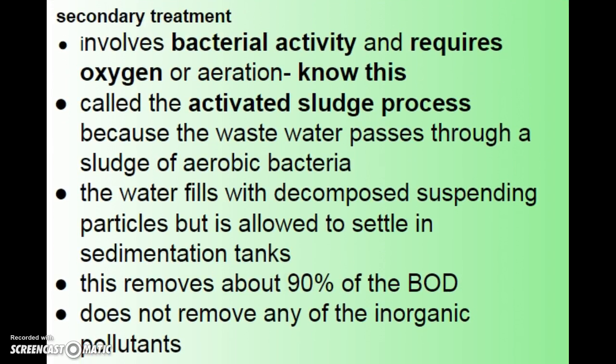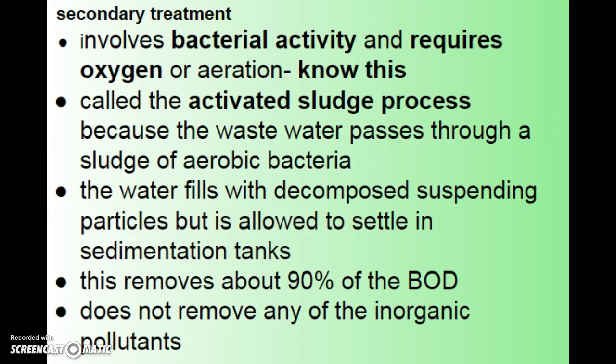Secondary treatment addresses what's actually harmful to us. It involves using bacteria — which need oxygen — so the water is aerated at this stage. This is called the activated sludge process: the wastewater passes through a sludge of aerobic bacteria that removes much of what drives up the biological demand. This removes about 90 percent of the biological demand, though it doesn't remove inorganic pollutants. The decomposed particles are allowed to settle to the bottom of a tank, and the cleaner water is taken from the top — getting safer to drink, though still not fully safe.